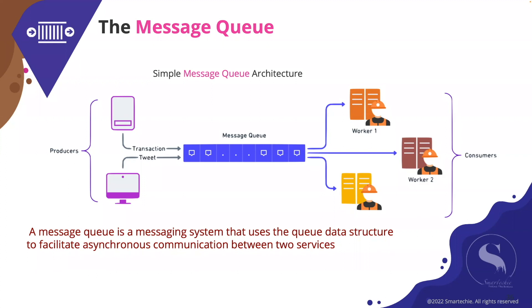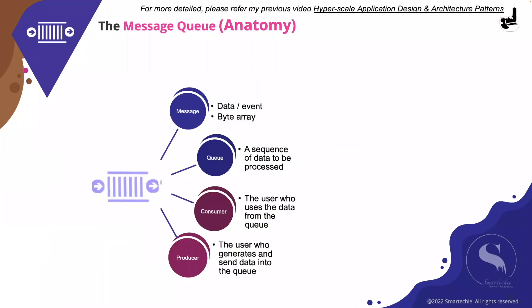Message queues are asynchronous in nature. This enables the producer to send any number of messages and continue with other tasks without waiting for a response from the consumer. Once the consumer processes the message, it can then notify the producer. Messages are temporarily stored until received and processed by the consumer, and a message is processed only once by a single consumer, though this depends on the configuration.